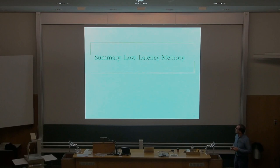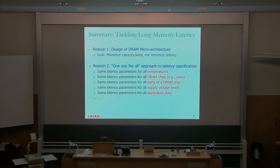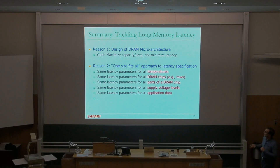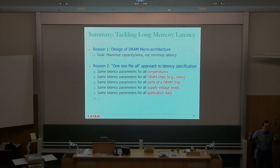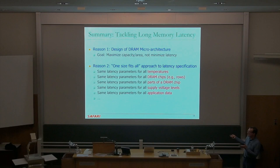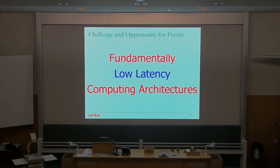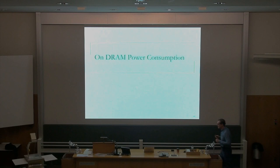Summary of low latency memory: we've looked at a lot of approaches. We have two major reasons for long memory latencies — the design of the DRAM microarchitecture, and the one-size-fits-all approach to latency specification. Charge cache and partial restoration also fit into this space, and access pattern awareness should be added — we have the same latency parameters for all access patterns today, but that doesn't need to be the case. Now let's talk a little bit about power consumption, and then we'll take a break and jump into processing-in-memory.